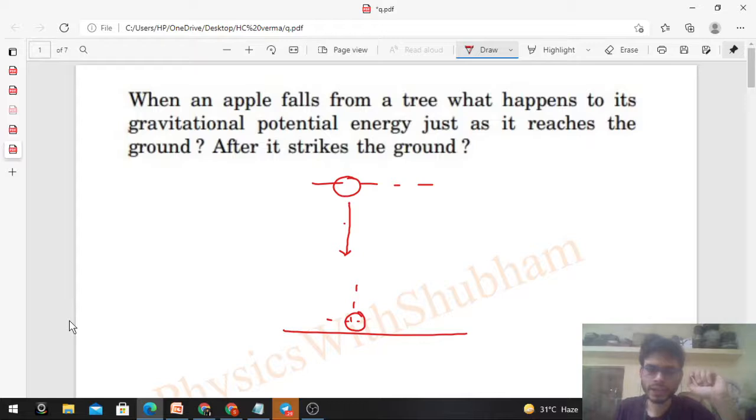Or you can say delta U equals delta K. The decrease in potential energy will be the increase in kinetic energy.